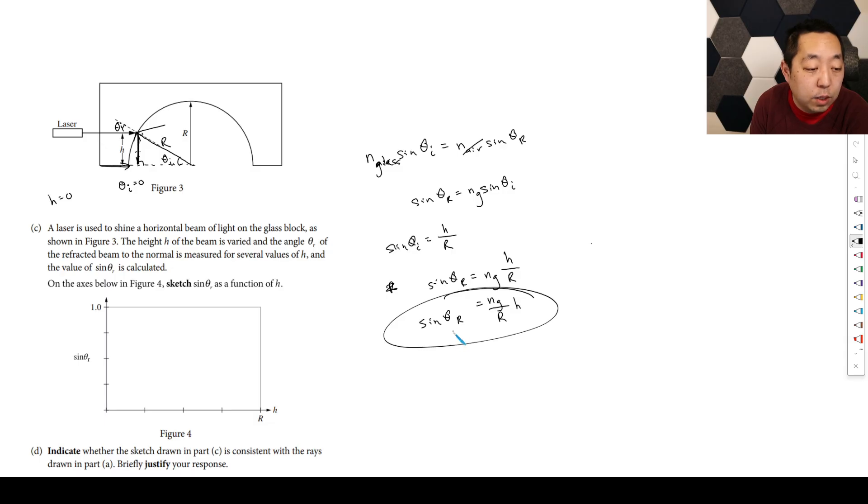And so this is ng over r times h equals sine of theta r. So that's our relationship. This is the y variable to the x variable. This is going to be a straight line. It's a straight line with the ratio ng over r. So the slope of our line, because this is our x variable and this is y, this is just a straight line because it's linear in terms of h. So the slope is going to equal ng over r.